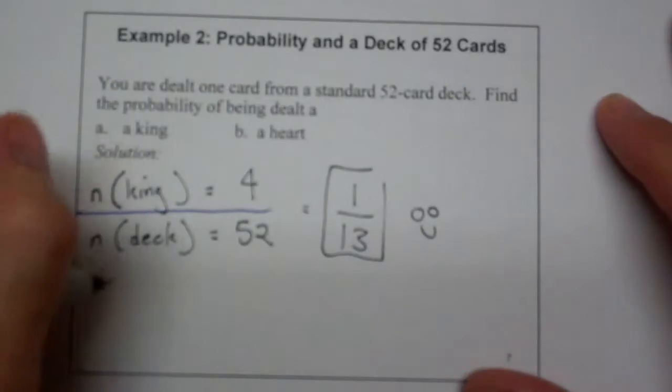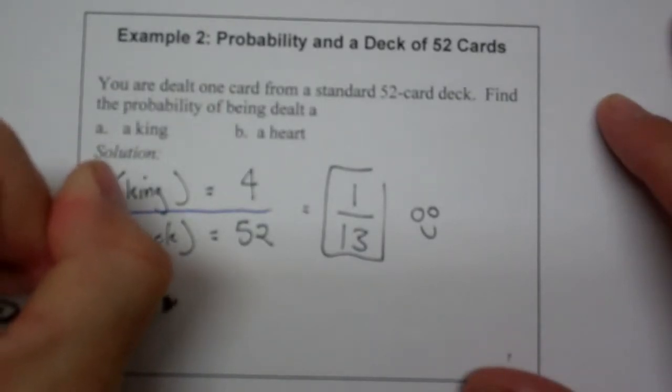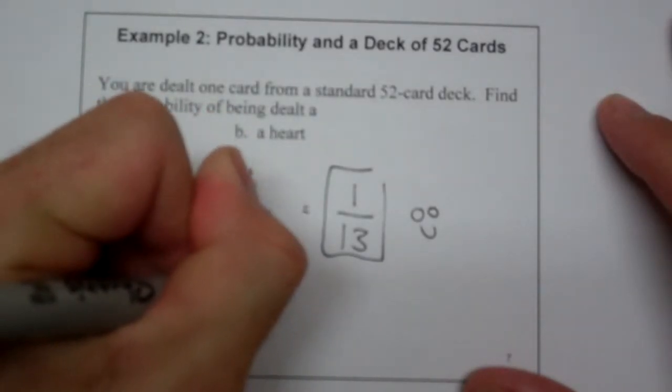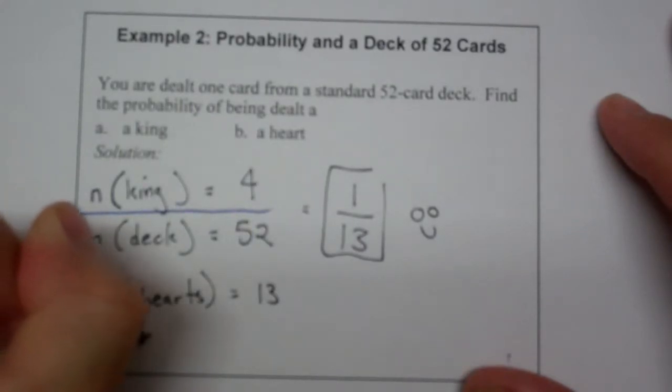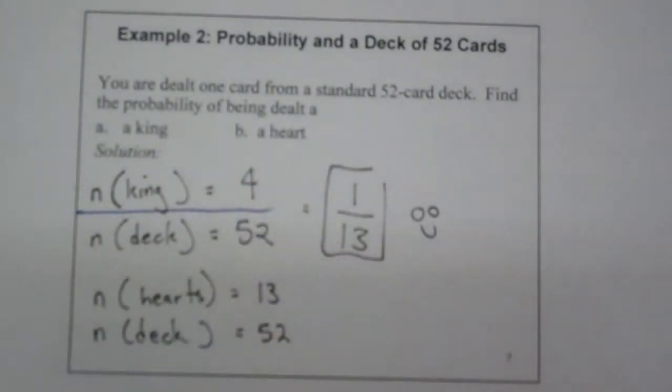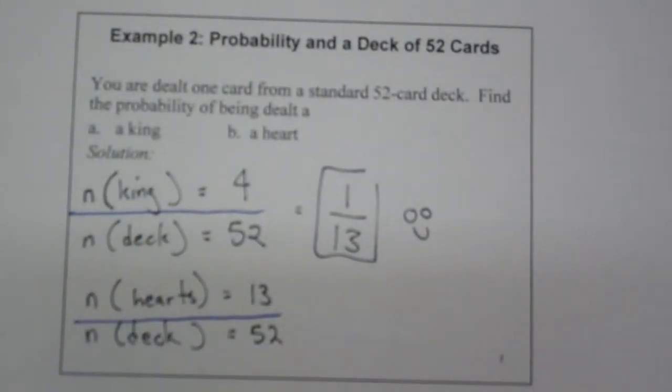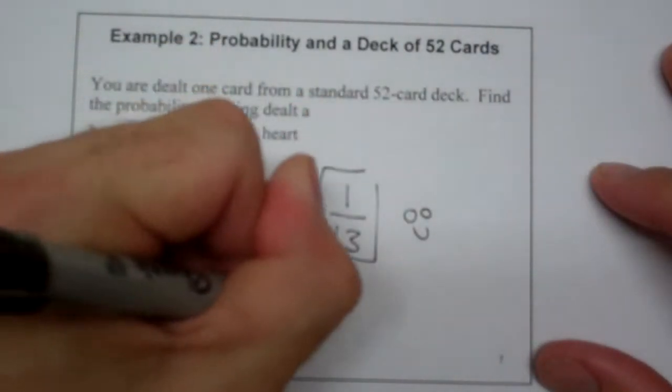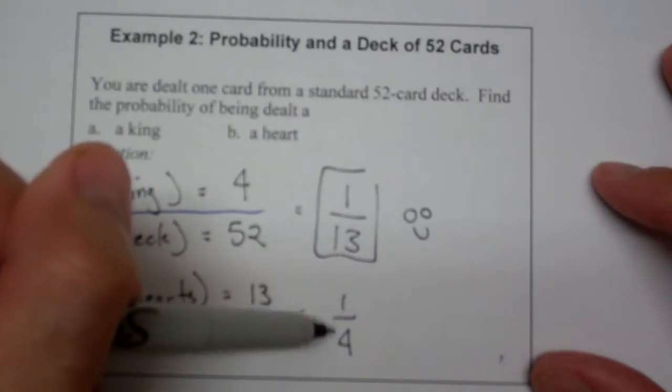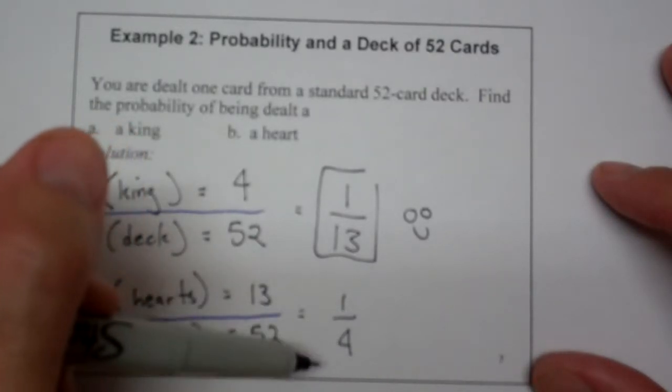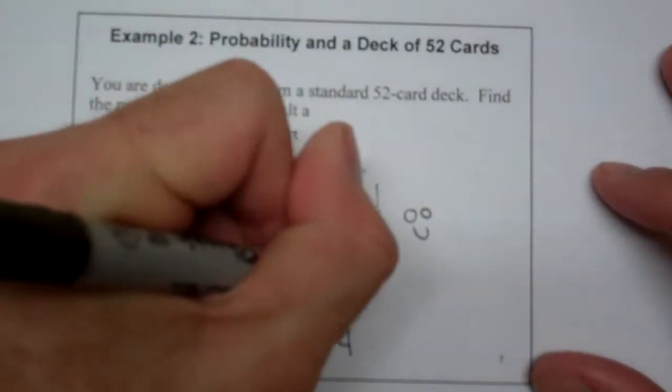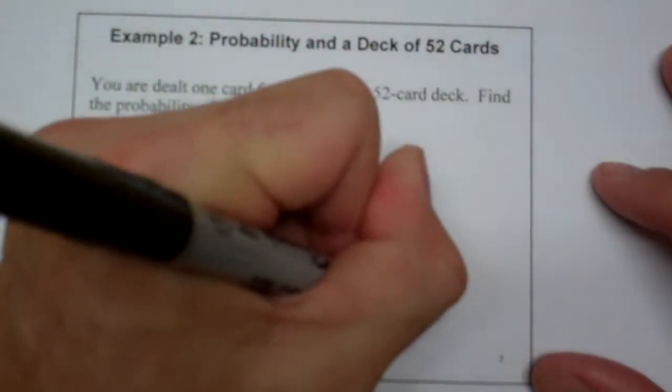Now, what about a heart? All right. Well, the number of hearts in the deck is 13, and then the number in the deck is 52 again. And so I am simply going to divide that like a fraction, like it told me to. And of course, 13 goes into 52, one-fourth. And if you think about it, hearts are one-fourth of the deck, spades are one-fourth of the deck, clubs are one-fourth of the deck, and so forth. So it makes sense that the hearts would come up one out of every four times, and that makes us happy.